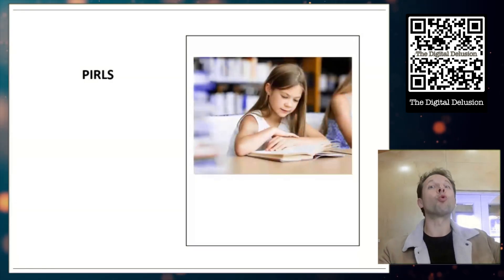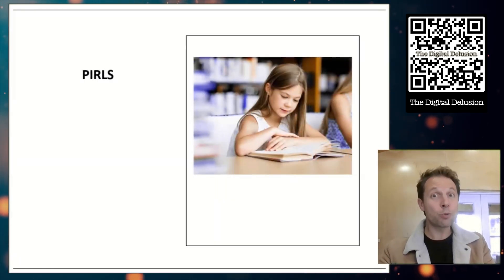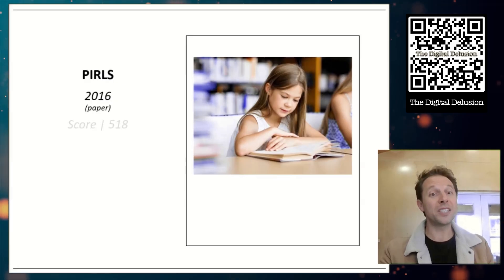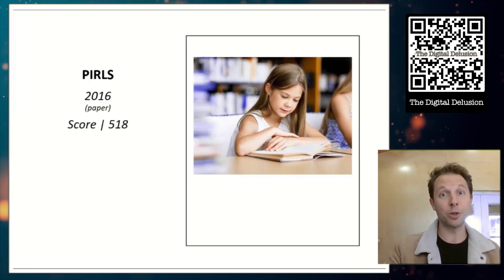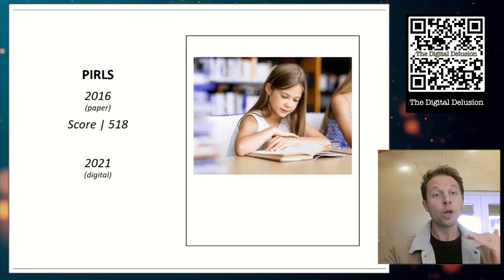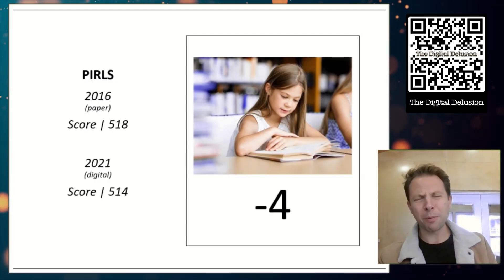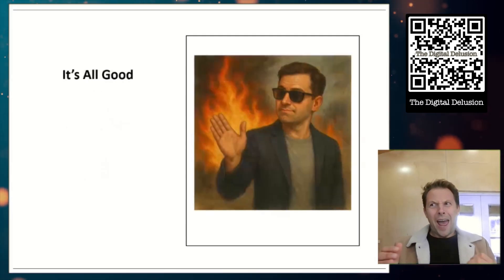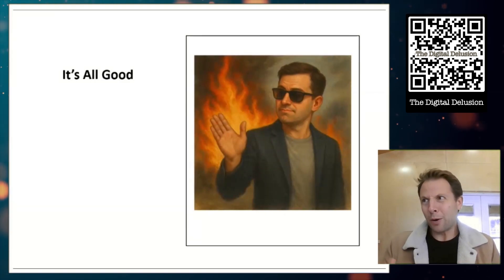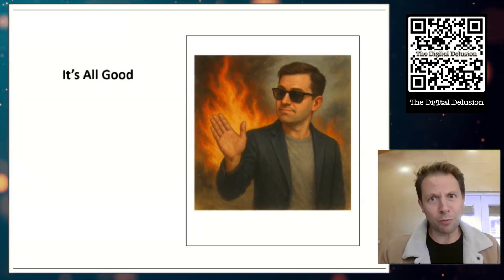Pearls. This is the international reading exam. Last time they did reading on paper was 2016. We saw an average score of 518. Surely, we're going to see a mode effect here. 2021, when they moved digital, we saw a score of 514. Only a drop of four points. So wait a second, everything appears to be working just fine. Where's that magical mode effect everyone is talking about?